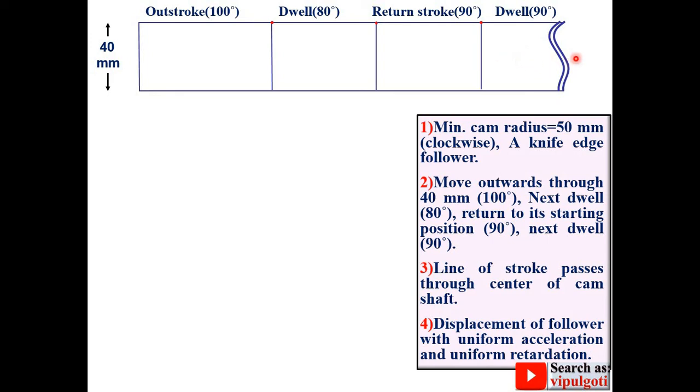But if you can't accommodate it into your sketchbook, then you can use this symbol. Now divide the outstroke into six equal parts and give the name as 0, 1, 2, 3, 4, 5, 6. And draw the vertical lines passing through all these six points.